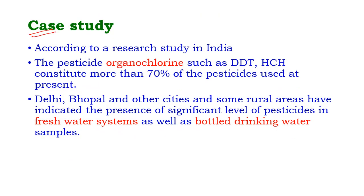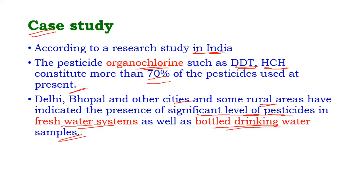Case study: according to a study conducted in India, pesticides called organochlorines — such as DDT and HCH — constitute more than 70% of the pesticides used in our country. Studies in Delhi, Bhopal, and other cities and rural areas have indicated the presence of significant levels of pesticides in fresh water systems and also in bottled drinking water samples.